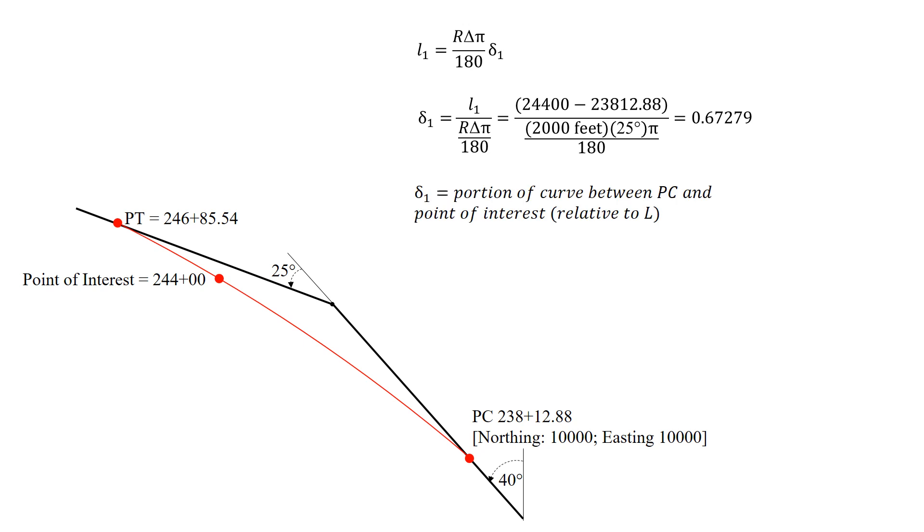And again, that's the portion of the curve between the PC and our point of interest relative to L. So this is a proportion. So roughly two-thirds of the curve is present until you reach our point of interest at station 244. So we're about two-thirds of the way through the curve for this particular point of interest.